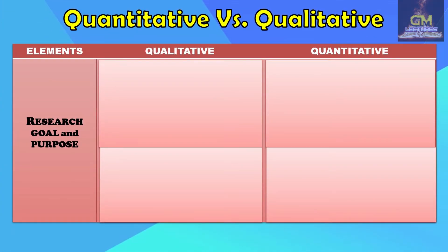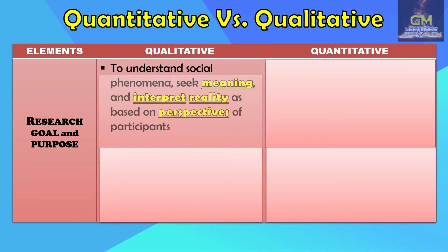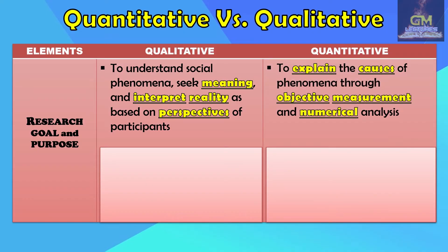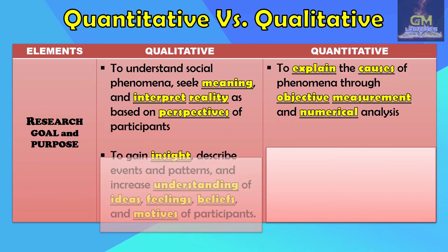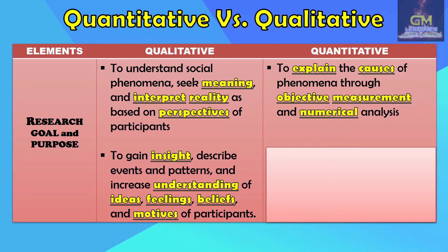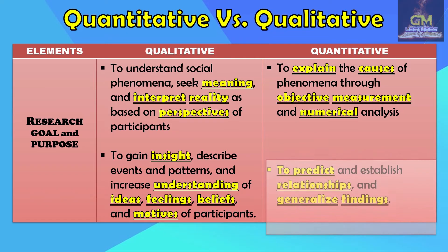In terms of research goal and purpose, qualitative research aims to understand social phenomena, seek meaning, and interpret reality based on the perspectives of the participants. While quantitative research aims to explain the causes of phenomena through objective measurement and numerical analysis. Furthermore, qualitative research aims to gain insight, describe events and patterns, and increase understanding of ideas, feelings, beliefs, and motives of the participants. While quantitative research aims to predict and establish relationships and generalize findings.